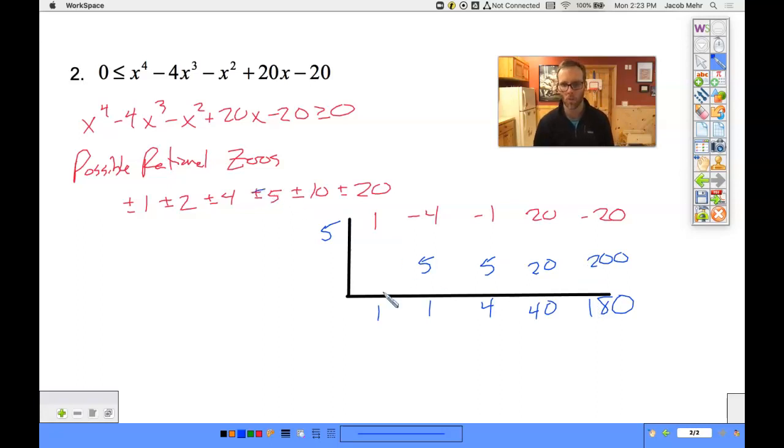Now, if 5 doesn't work, take a look. Remember, we're checking a zero that's positive, and our leading coefficient is positive. Notice, none of the bottom row is negative. That tells me 5 is an upper bound. So not only can I get rid of positive 5, but also positive 10 and positive 20.